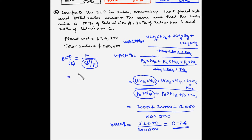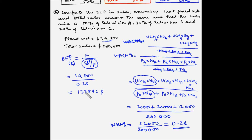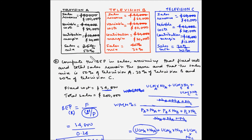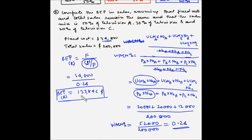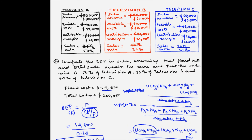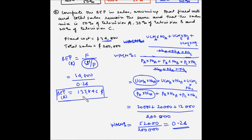Substituting this into the break-even formula: fixed cost of $34,800 divided by the contribution margin percentage of 0.26 equals $133,846. So $133,846 is the break-even point in terms of revenue for the entire company. If we want to find out the break-even point for each product type, we apply the new sales mix: 50% of $133,846, 30% of $133,846, and 20% of $133,846.